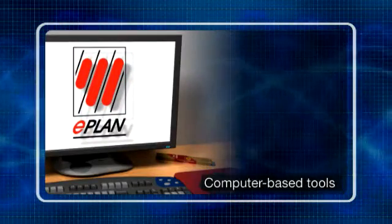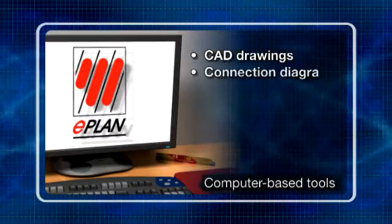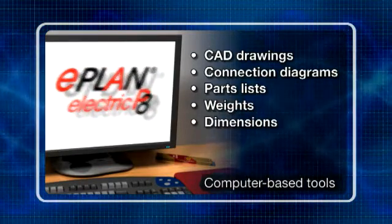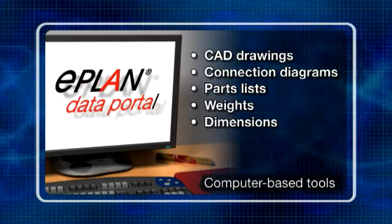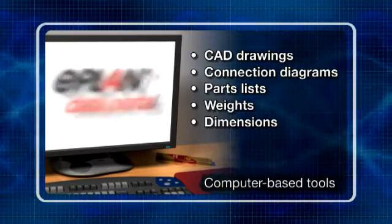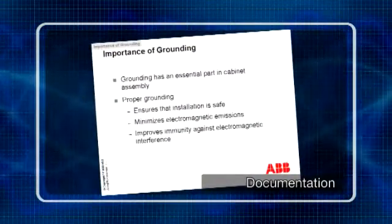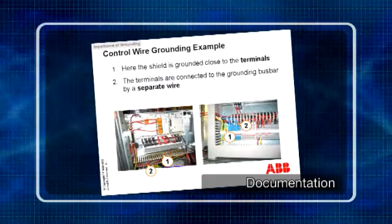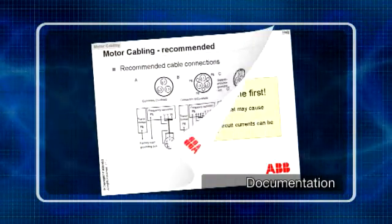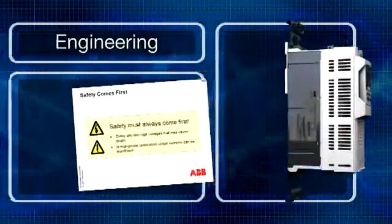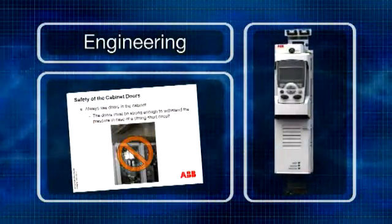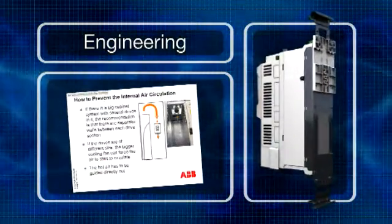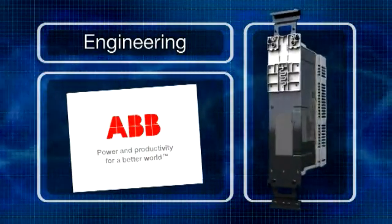System integrators using e-plan can immediately access drive-related information such as CAD drawings, connection diagrams, parts lists, weights and dimensions, and use this information to produce their own bills of material and electrical diagrams. ABB has also compiled detailed e-learning courses covering cabinet engineering, which describe considerations such as safety, cooling and grounding arrangements. With the ABB support documentation and tools, the system integrator is able to build their entire system more easily, saving time and money and with greater accuracy.